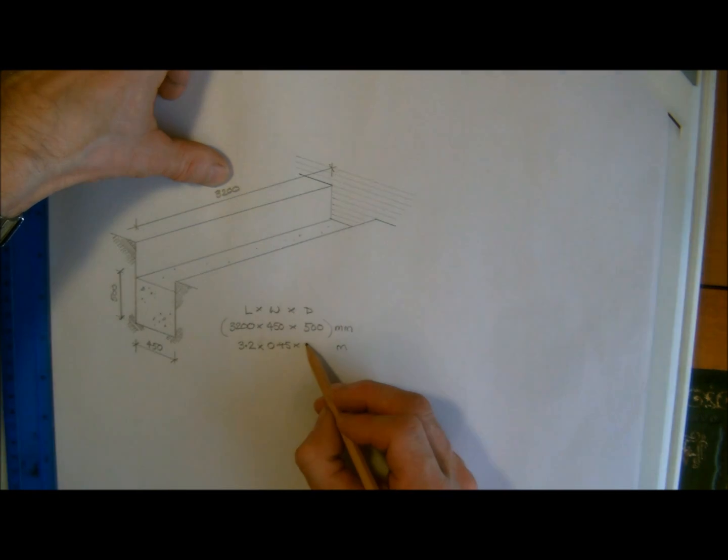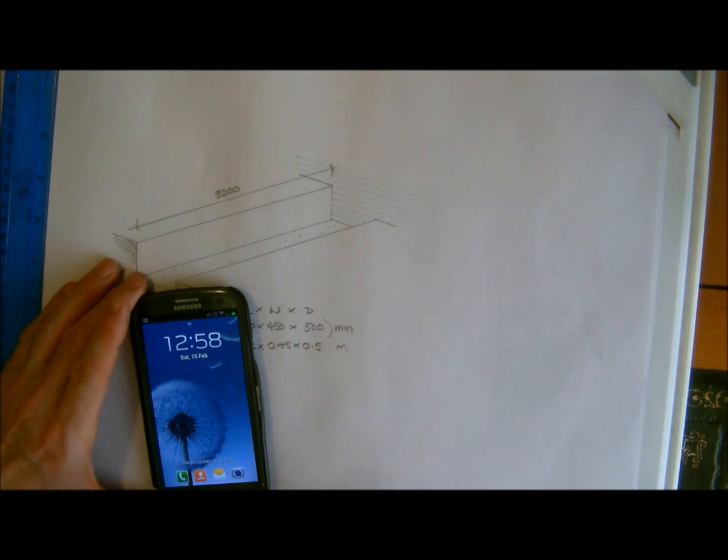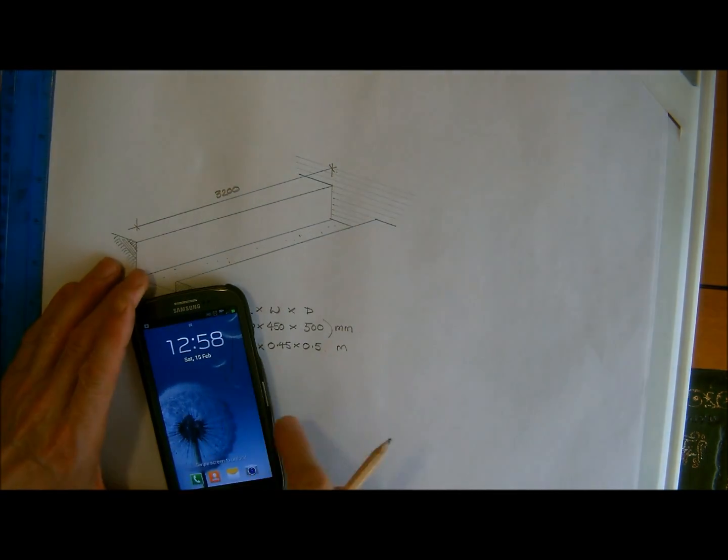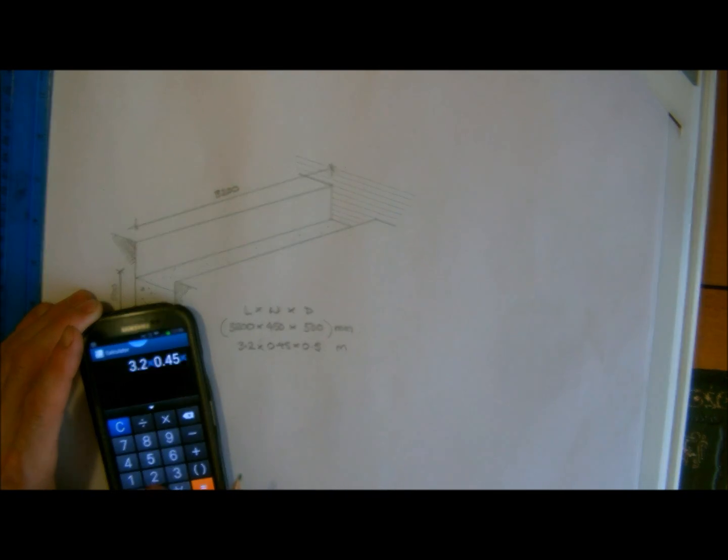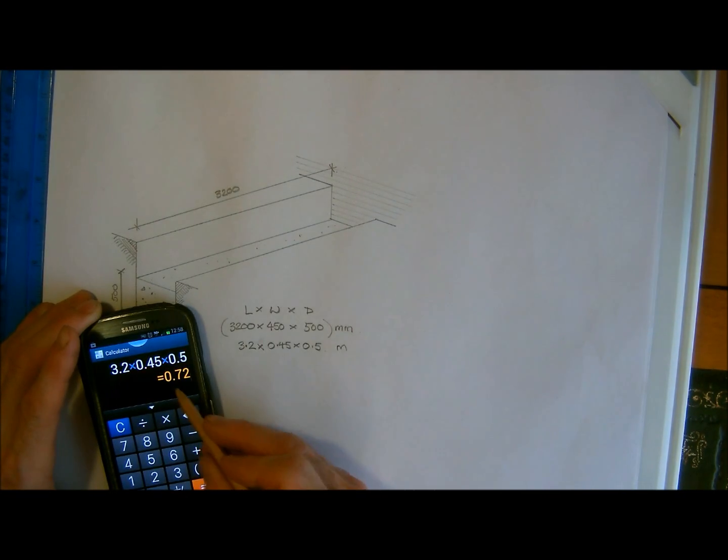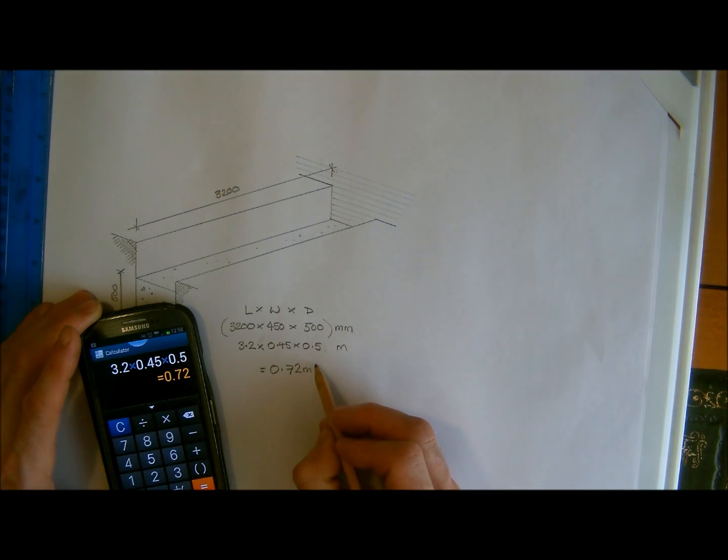So if we just get our calculator involved, we can see here that what we need is three point two multiplied by point four five multiplied by point five equals and we can see here we have an answer of zero point seven two meters cubed.